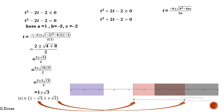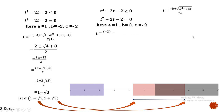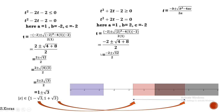For Case 2, solving T² + 2T − 2 ≥ 0 using the same quadratic formula with A=1, B=2, C=−2: substituting gives −2 ± √(4 − 4·1·(−2)) over 2. Since minus times minus gives plus, we get −2 ± √(4+8) over 2, which is −2 ± √12 over 2, giving a net result of −1 ± √3.